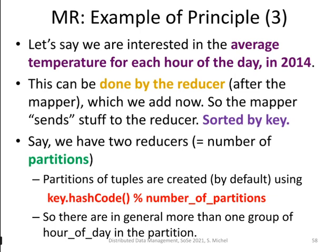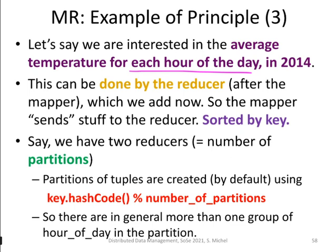Now let's add a reducer that does something useful. We're interested in the average temperature for every hour of the day in 2014. We already know how to filter for 2014 tuples. Average means we have to group — as in database systems — according to the key and then compute the aggregate, which is the average in this case. This is exactly the reducer's task. The key has to be the hour of the day so tuples end up at the same reducer.